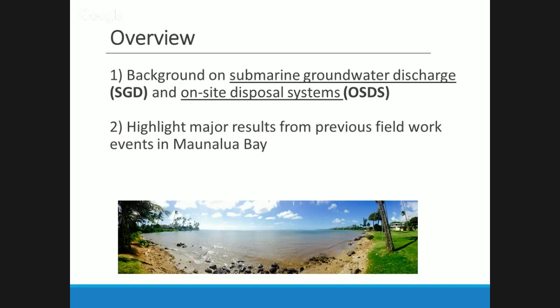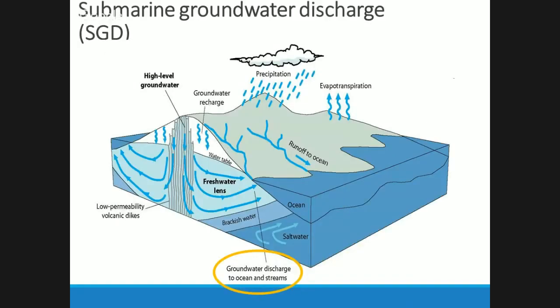So what is SGD, or submarine groundwater discharge? It's groundwater that discharges along the coast. It's recharged at higher elevations typically, and due to a hydraulic gradient it gets pushed out along the coast — especially here in Hawaii, where we have these really porous lithologies. Groundwater is also an important mechanism for transporting contaminants from high elevations down to lower elevations.